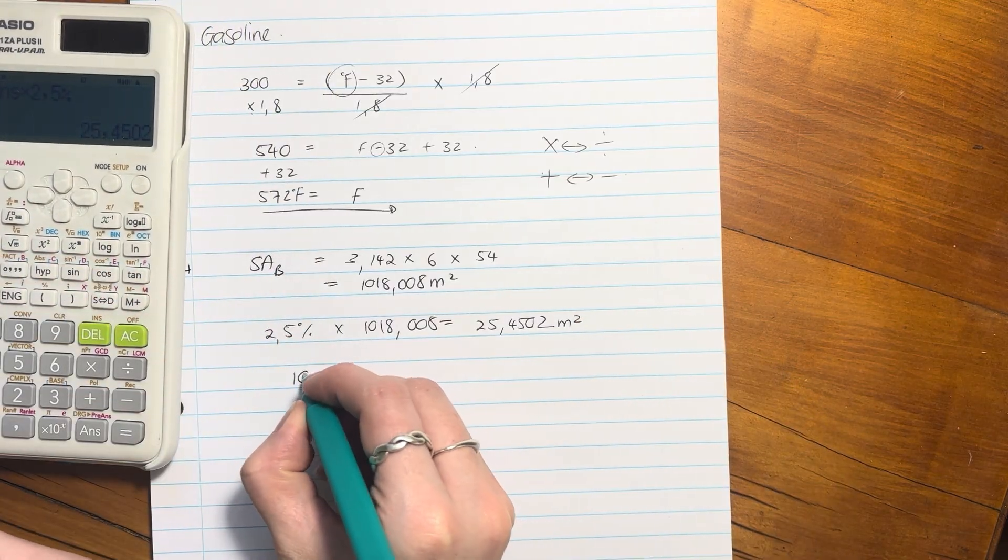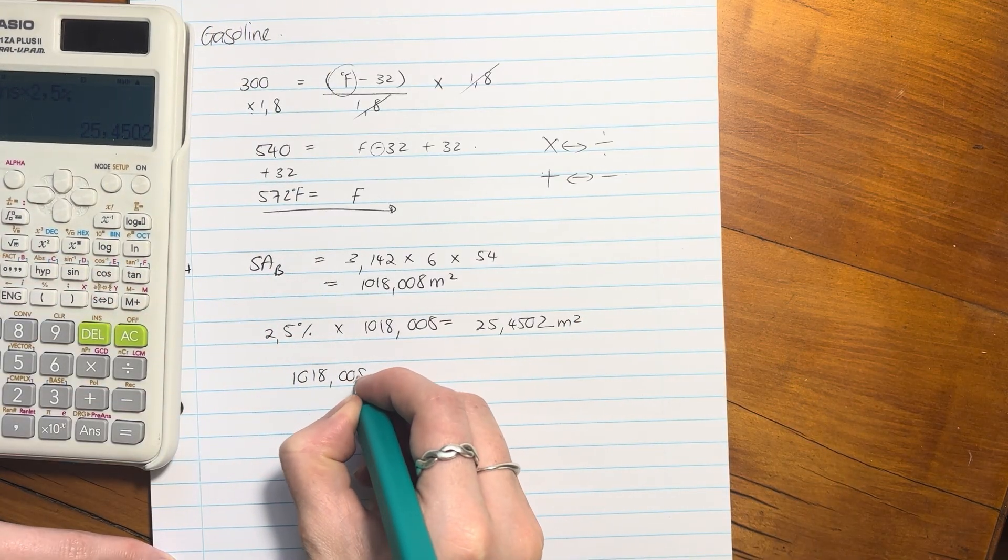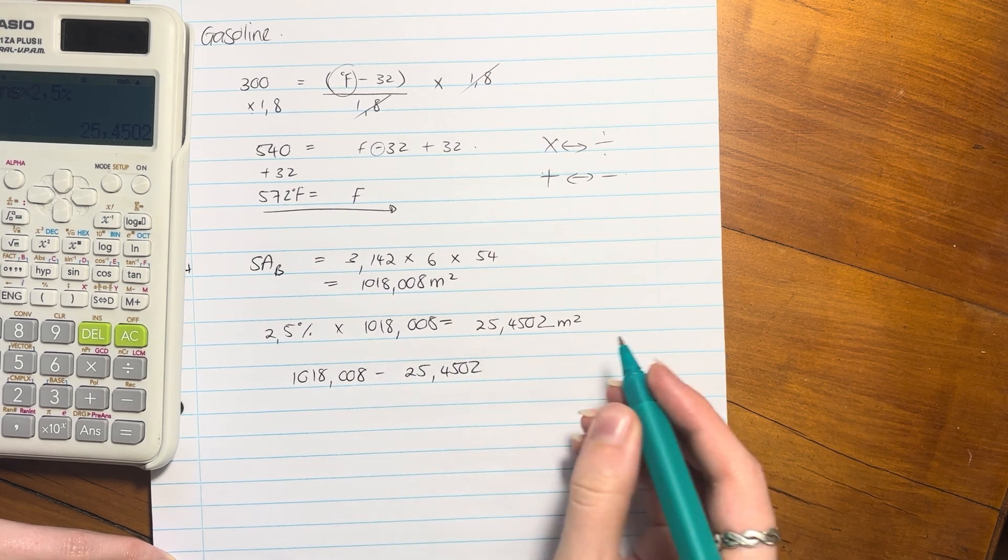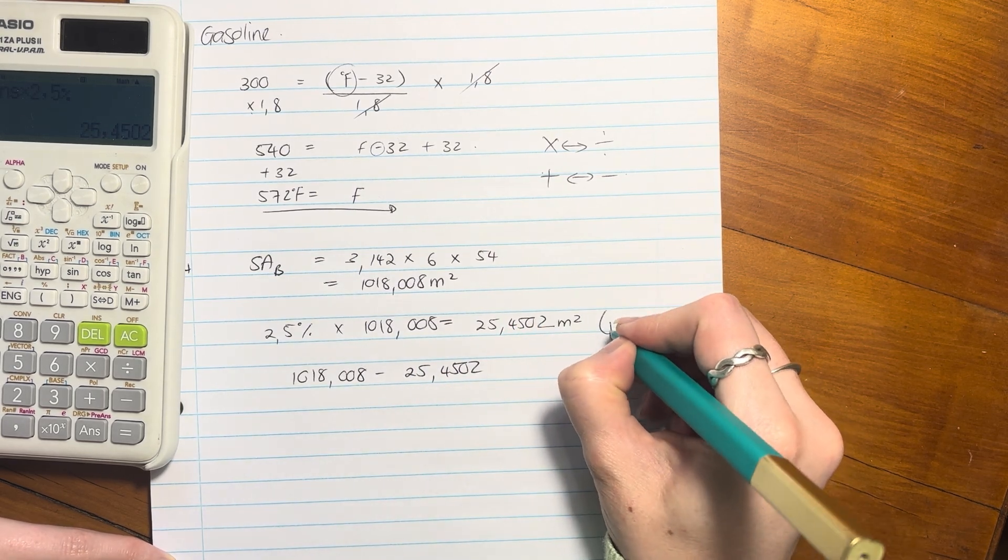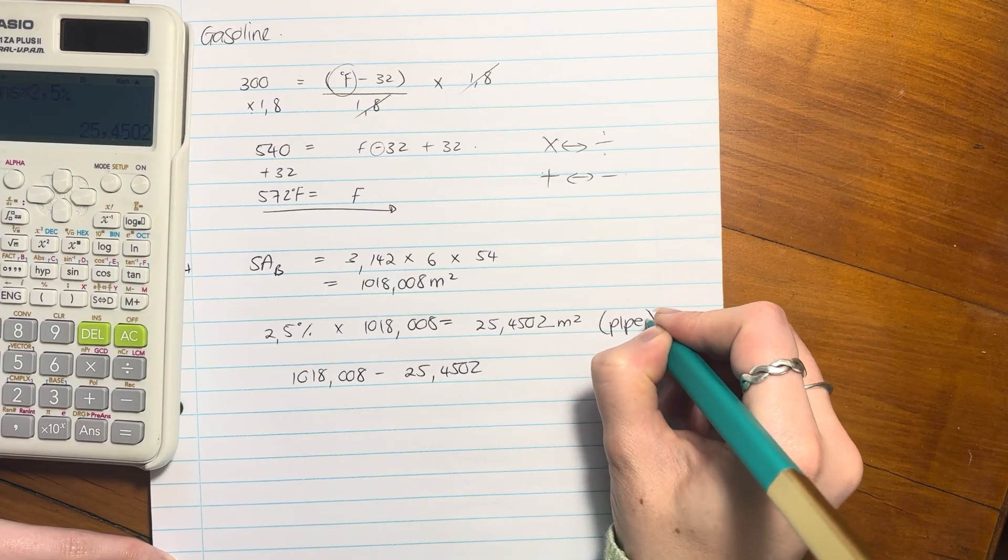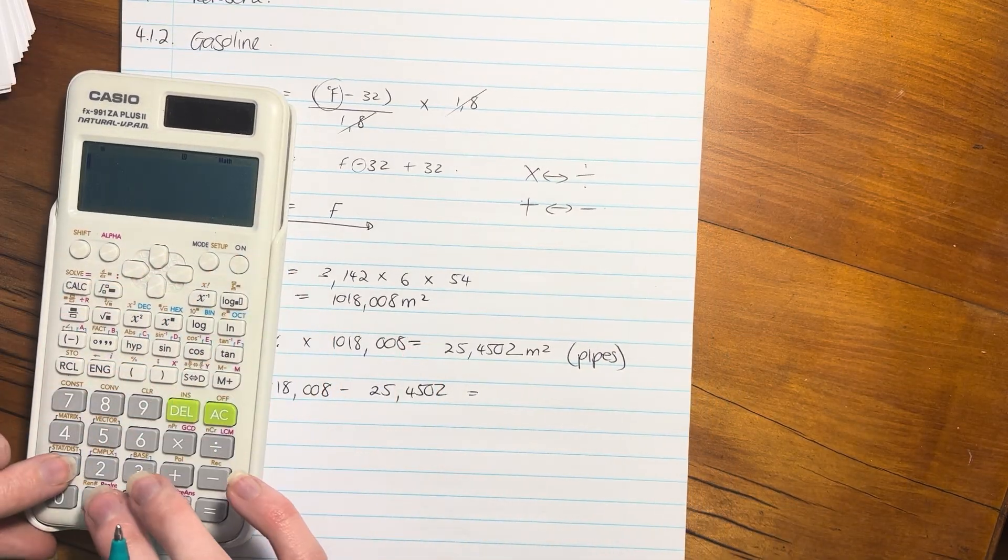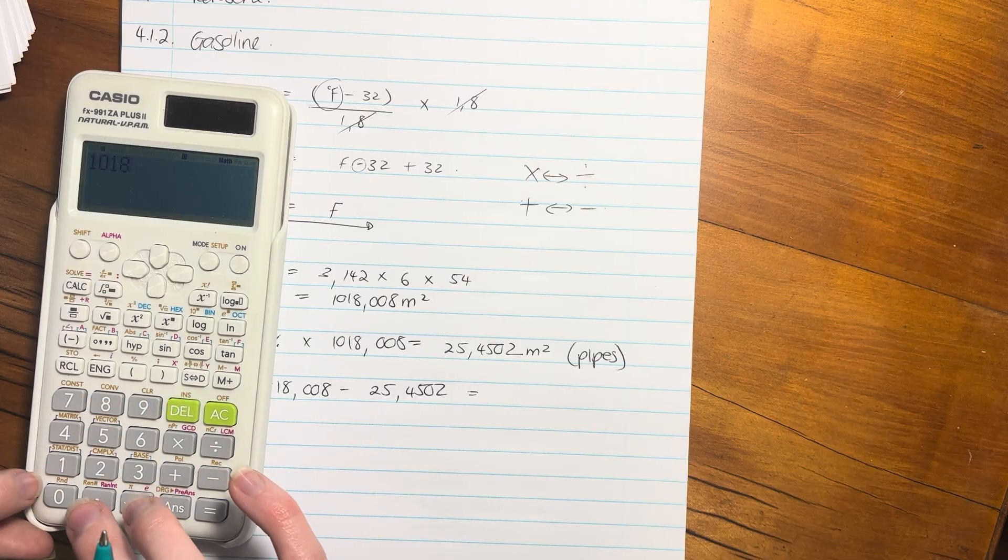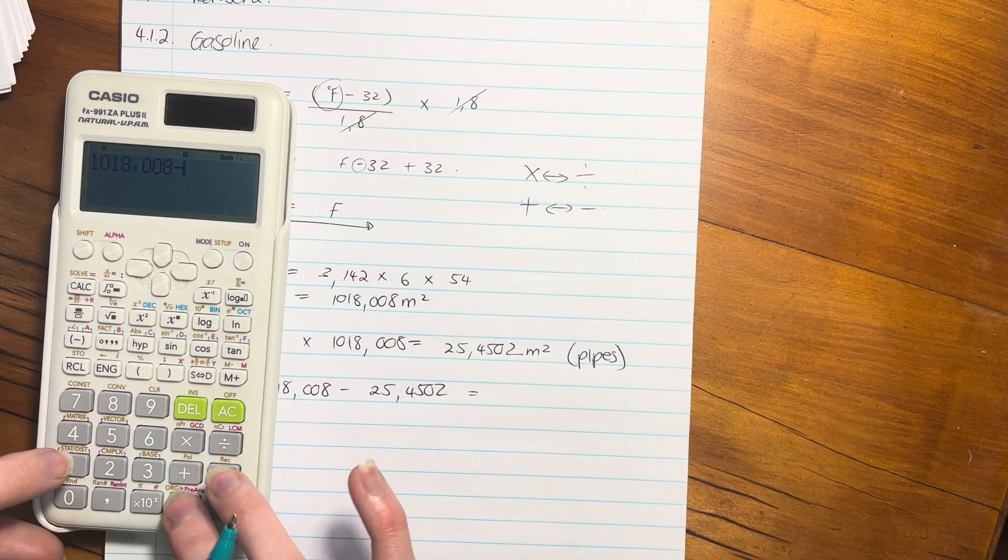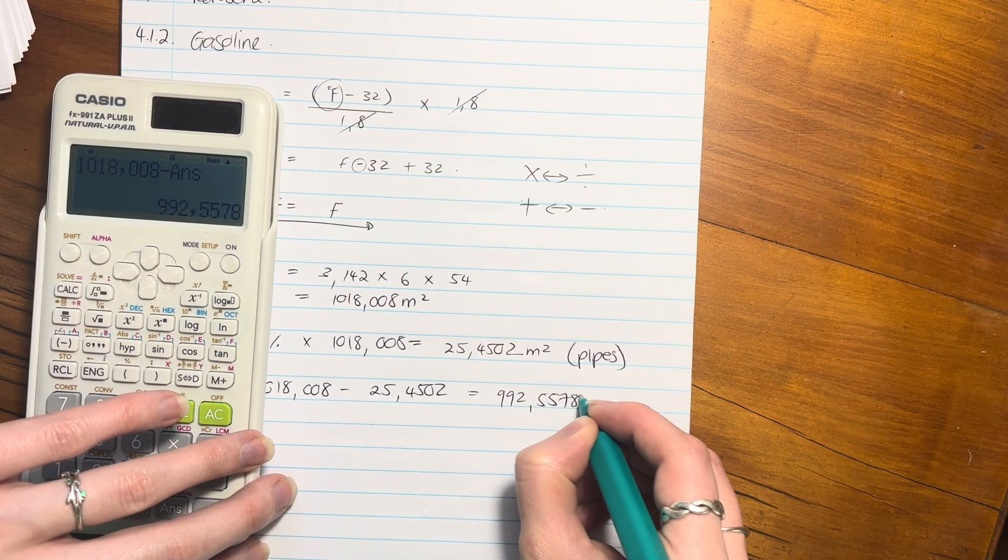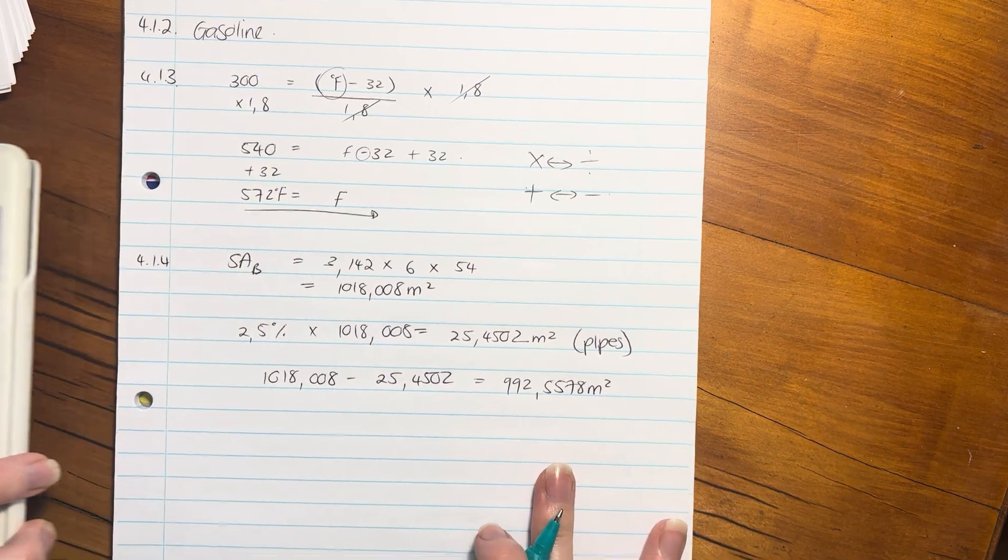And then we need to subtract that off of this. That's quite important. This is basically the area of the pipes, which we need to take off. So we're going to say 1,018. Do you see how I'm not rounding off? Very important. You only do that at the end. So that is the surface area of section B.